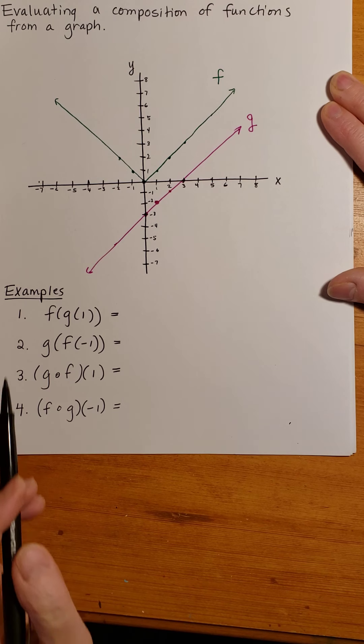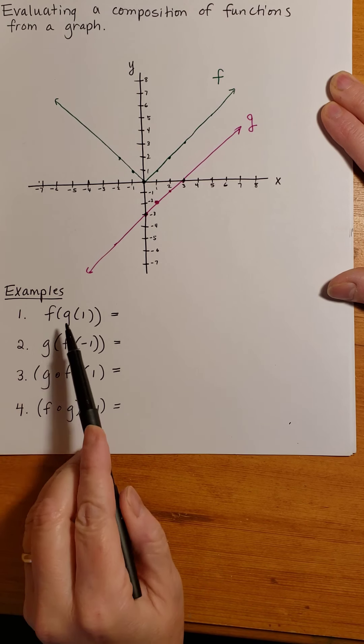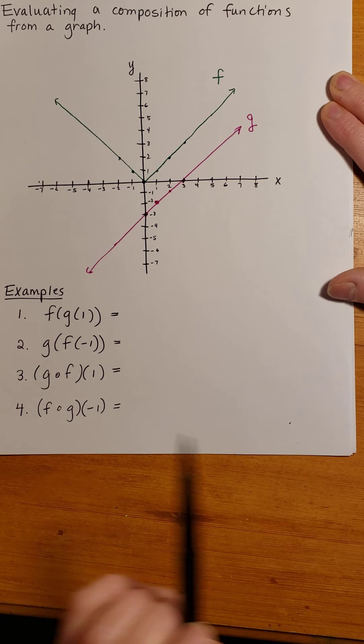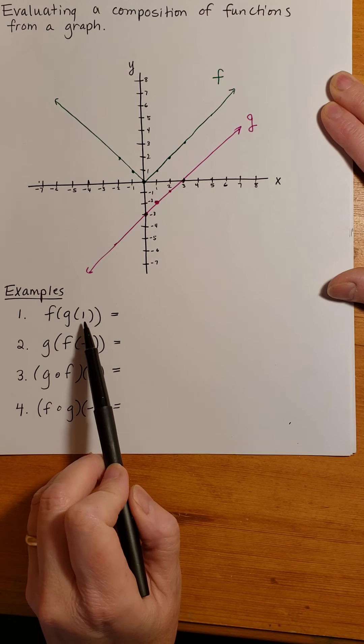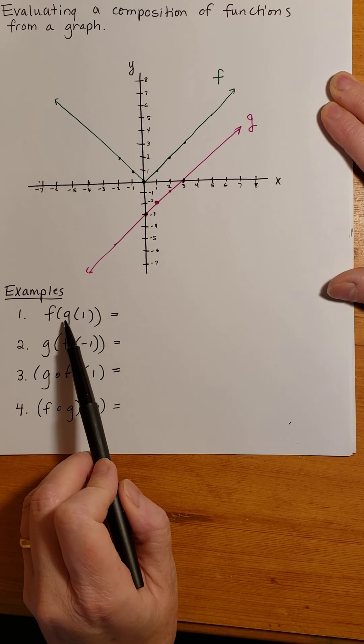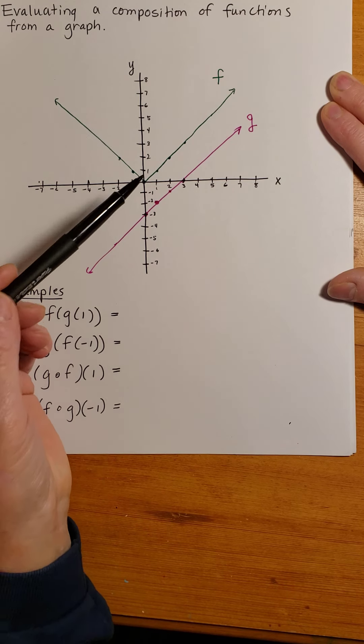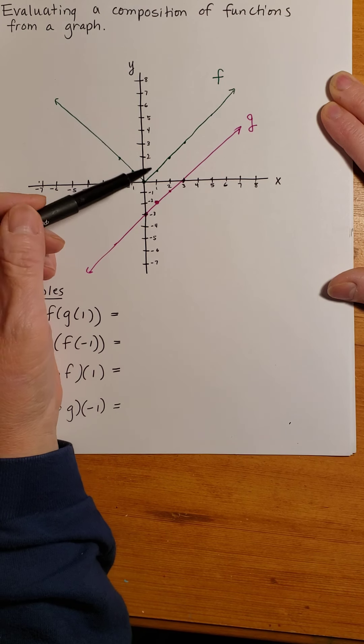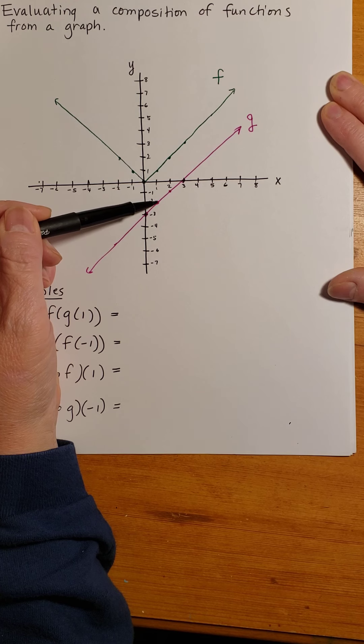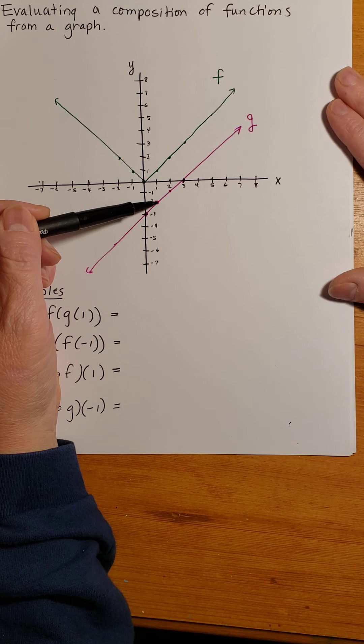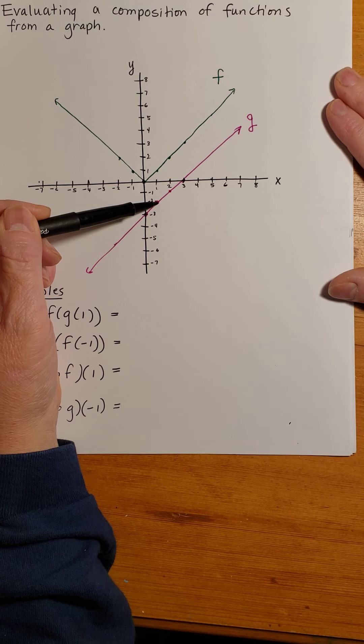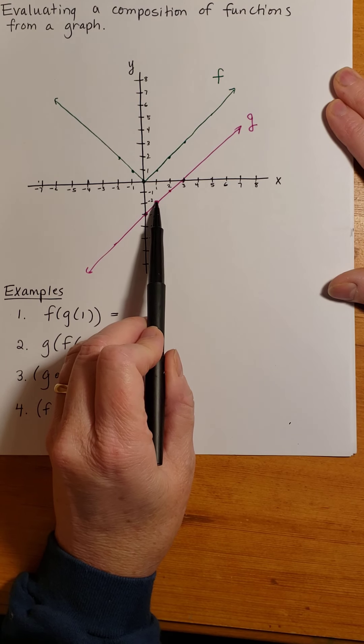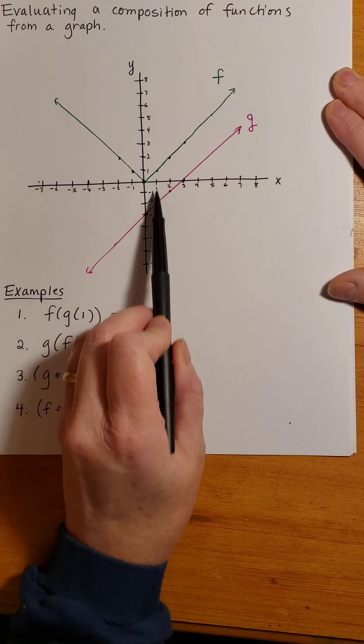So here are the examples. In example 1, f of g of 1. I want to evaluate that. I take the input of 1, and first I'm going to put it into the g function. I identify the x value of 1, and then I take a vertical path to the function itself, the graph of the function, and I see that the y value corresponding to the point of intersection with the function and my vertical line at 1 is negative 2.